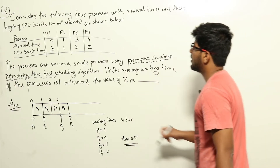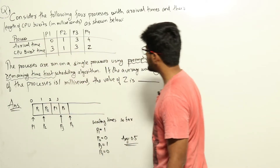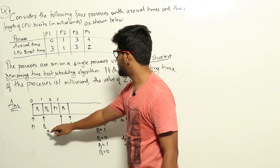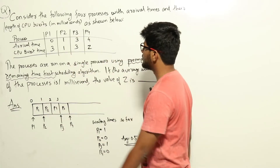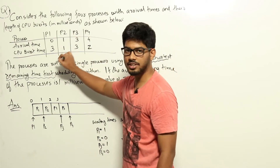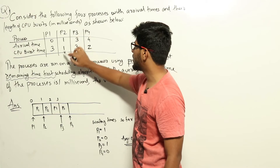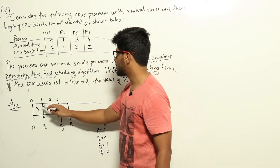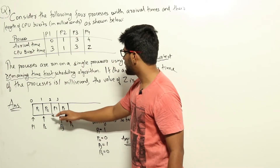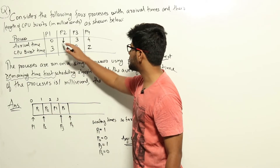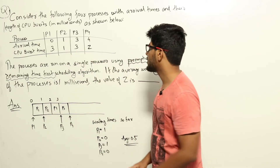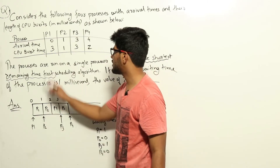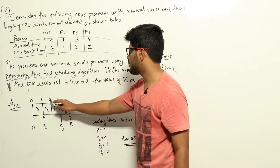Initially at time 0, only process P1 is available, so we run P1. At time 1, P2 arrives. P1's remaining time is 2 milliseconds, but P2's remaining time is only 1 millisecond, which is less, so P2 preempts P1 and starts running. At time 2, P2 finishes executing since it had only 1 millisecond of burst time. P1 then resumes running from time 2 to time 3.